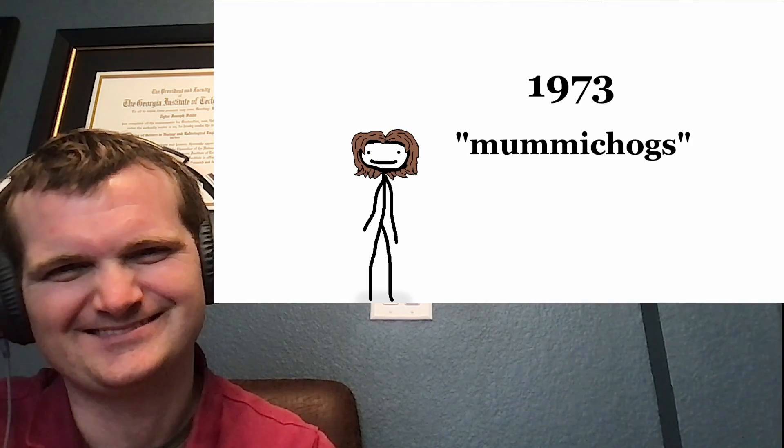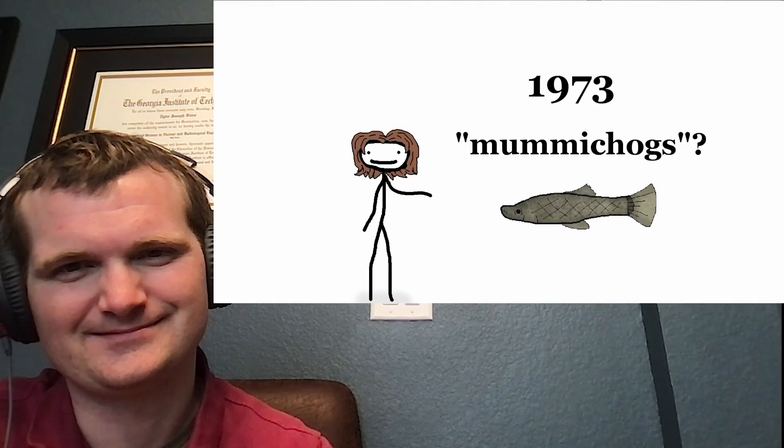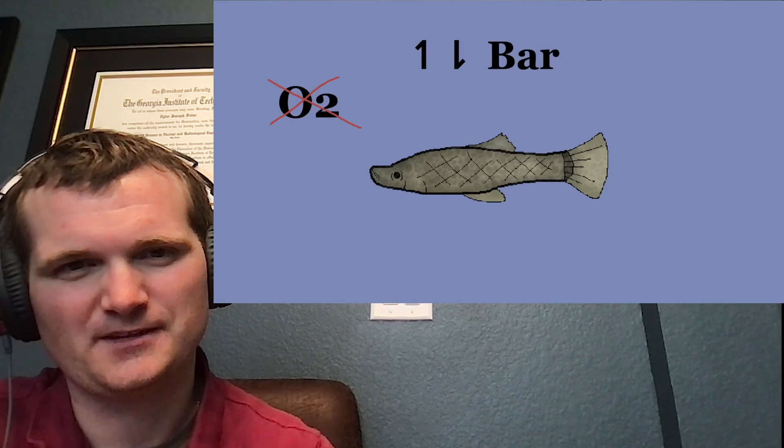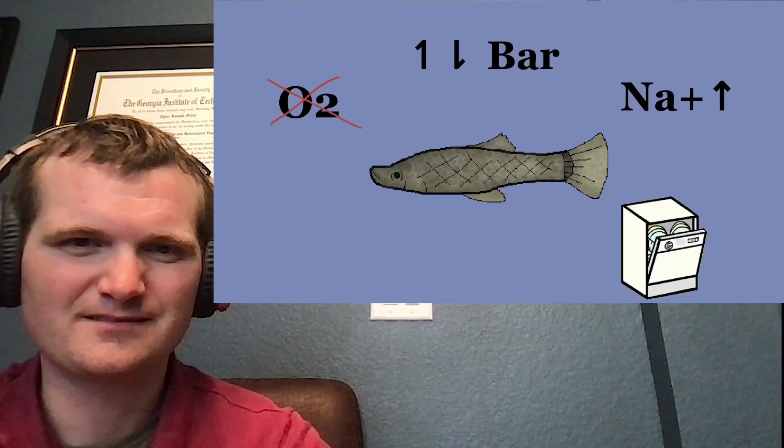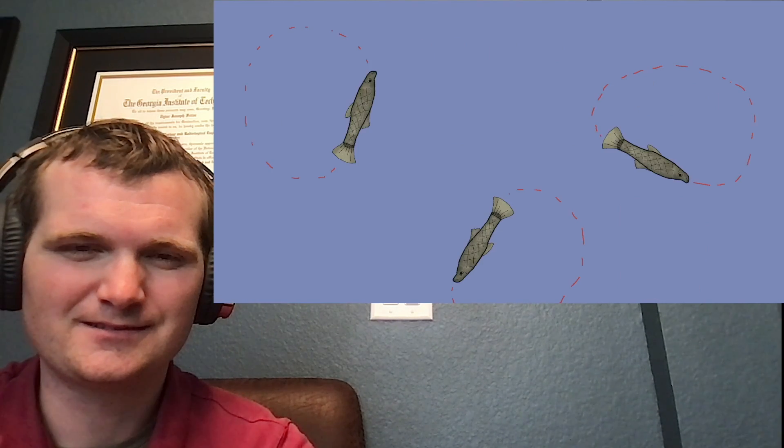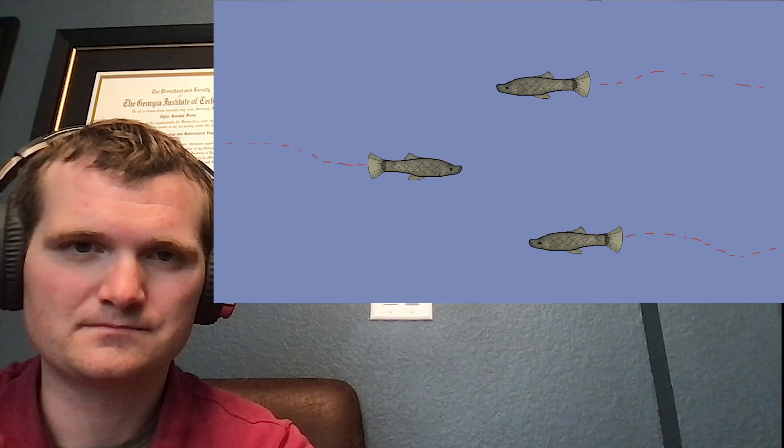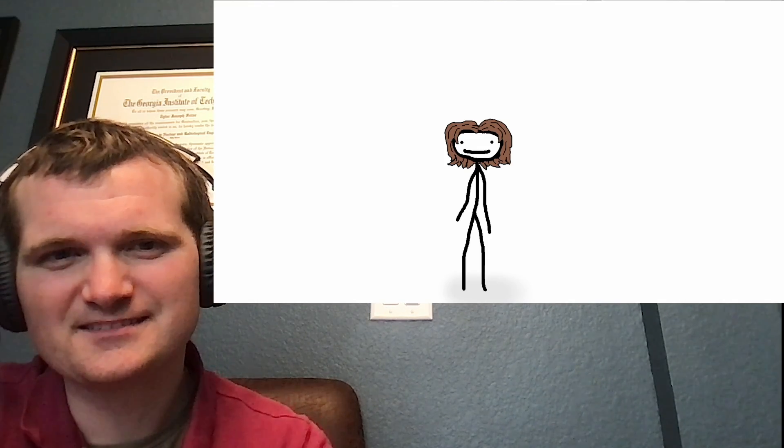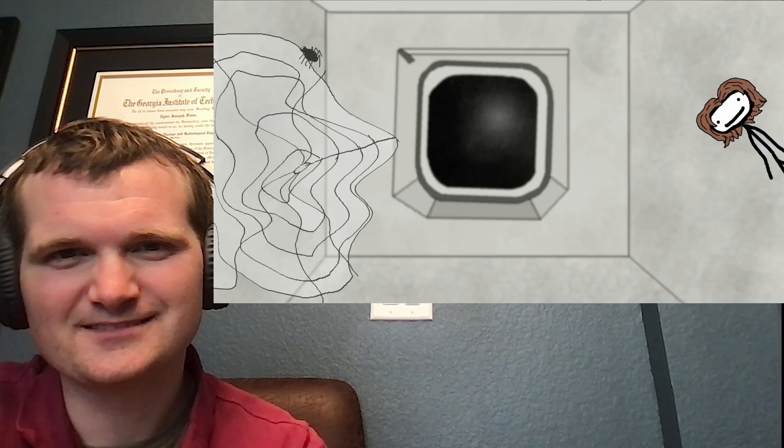In '73, we put mummichogs in space. What's a mummichog? It's one of these things. Like a fish, but real rough and tumble. Tolerates low oxygen, dishwasher safe, energy star rated, you name it, sister. They could only swim in circles, but after a couple weeks, they actually adapted to zero G and figured out how to maneuver properly. Even more interesting, we also brought mummichog eggs. And when these hatched, the little mummichoglets knew how to swim in zero G immediately. Kind of spooky. Space-born aliens.